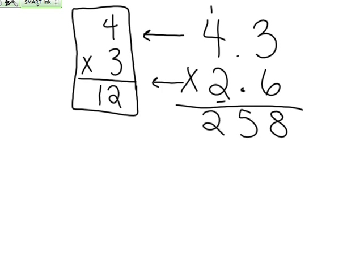Now since we're moving to the tens place and we're multiplying the tens place, we know we need to add a 0 to hold our spot in the ones place. 2 times 3 is 6. 4 times 2 is 8.